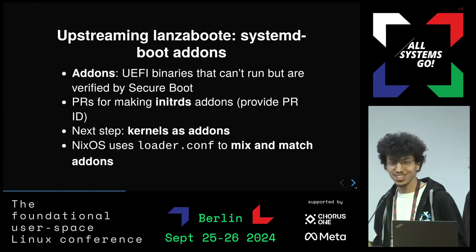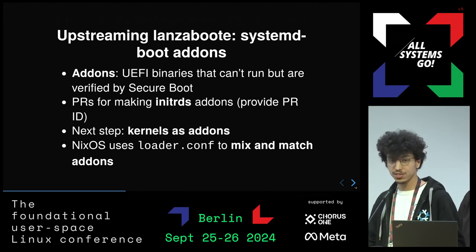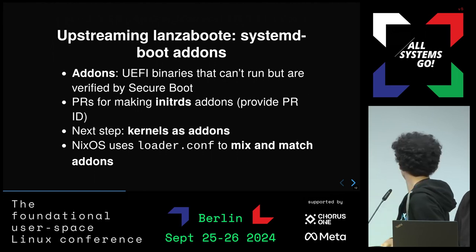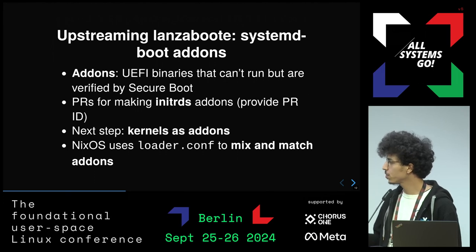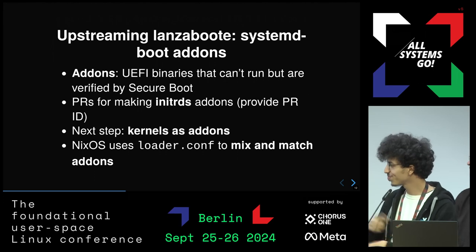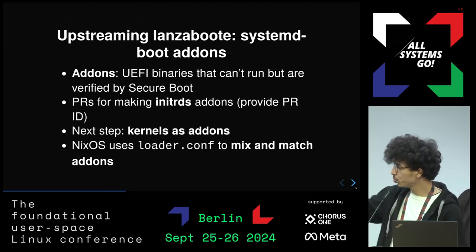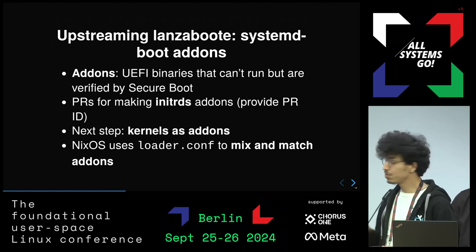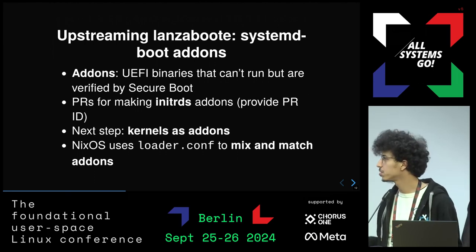This is not the upstream solution, so we went to systemd and they suggested we use systemd-boot add-ons — EFI binaries that cannot run standalone but whose signatures can still be verified because they are PE binaries. We wanted to make it possible to load initrds and kernels, but loading kernels as add-ons is not a good idea, so we changed the approach: store UKIs with no initrd and no command line, and have command line and initrd as add-ons, using loader.conf to mix and match them to replicate the lanzaboote feature. The minor difference is that we can mix and match kernels and initrds that weren't meant together, which is a minor security issue depending on your threat model — but shouldn't matter much if you also use measured boot.